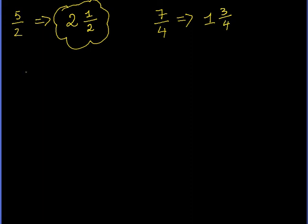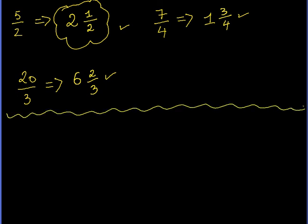Now let's try one that's a bit more complicated. Let's say we have 20 over 3. 3 goes into 20 six times, so I'll write a big 6. The remainder is 2, and the fraction is out of 3, so that's 6 and 2/3. That's how you turn an improper fraction into a mixed number.